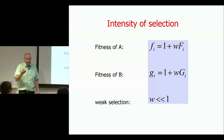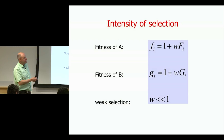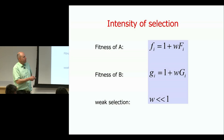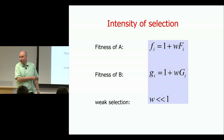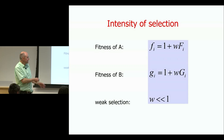I translate the payoff into reproductive value using the function: reproductive value = 1 + w·(payoff), where w is the intensity of selection. This parameter w scales the intensity of selection. In the traditional deterministic approach — the replicator equation — this parameter cancels out immediately. It only changes the speed of the differential equation but not the outcome, so the intensity of selection didn't matter in the classical approach to games. But in the stochastic setting it plays an important role.